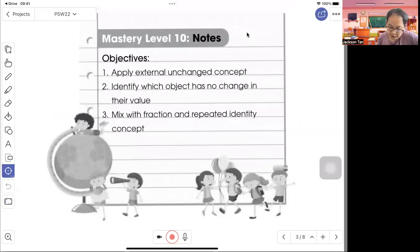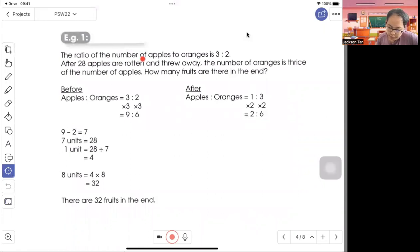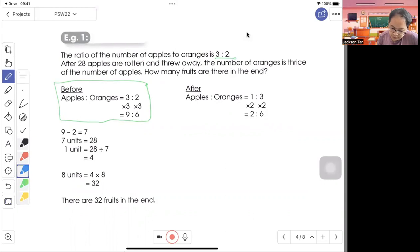Mastery Level 10, apply external unchanged concept, identify which object has no change in the value, and use reflection and repeated identity concept. The ratio of the number of apples to orange is 3 to 2. So we have the ratio before. After 28 apples are rotten, we know that the orange remains the same. And now orange is thrice the number of apples.